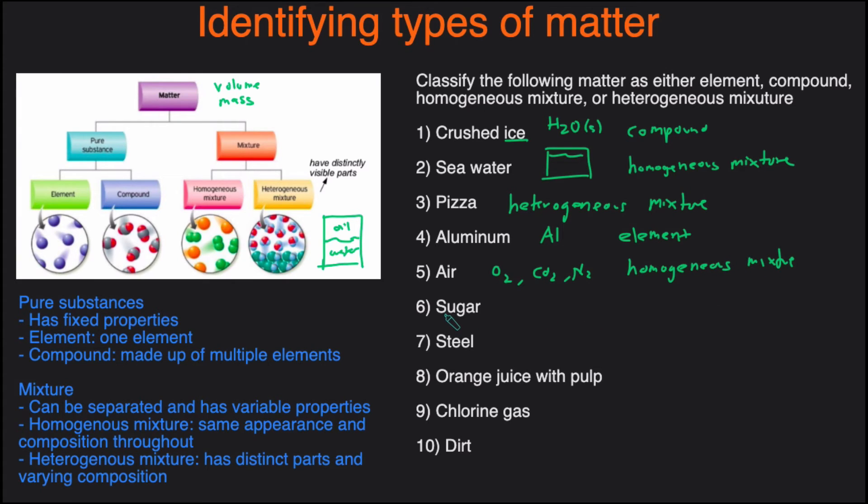Next one, sugar. Sugar's formula is C6, or one form of sugar is glucose, C6H12O6, and that is going to be a compound because it's made up of multiple types. It's a compound made up of multiple elements, but it's going to be a pure substance because we just have this one compound. We don't have multiple compounds together. So this right here is going to be a pure compound.